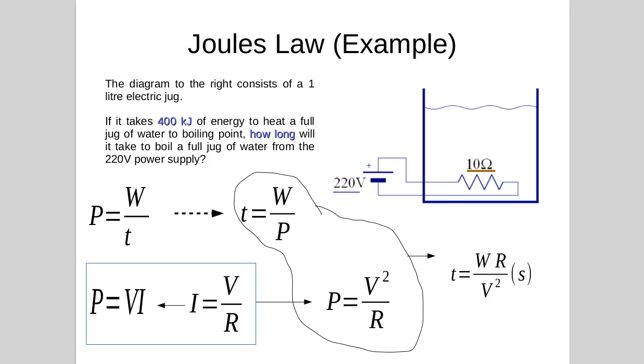If we take those two equations and put them together, T equals W over P and P equals V squared over R, put them together we can get time. Time equals energy by resistance over V squared.